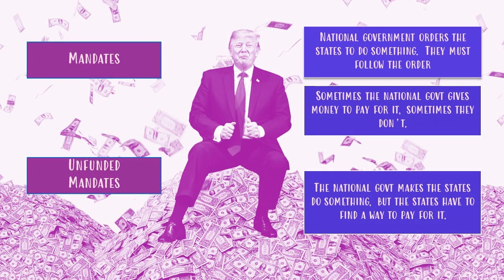Before we get into the money, let's make sure we understand what a mandate is. A mandate is a basic tool that the national government uses in which it orders the states to do something. The states have to follow the order — that's the supremacy clause, Article Six. When the national government tells the states to do something, they must do it because national law is always supreme over states.